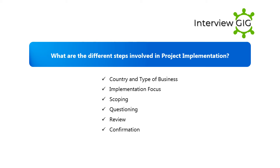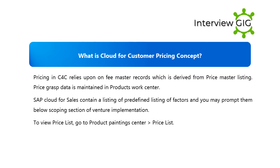What are the different steps involved in project implementation? The steps are: country and type of business, implementation focus, scoping, questioning, review, and confirmation.